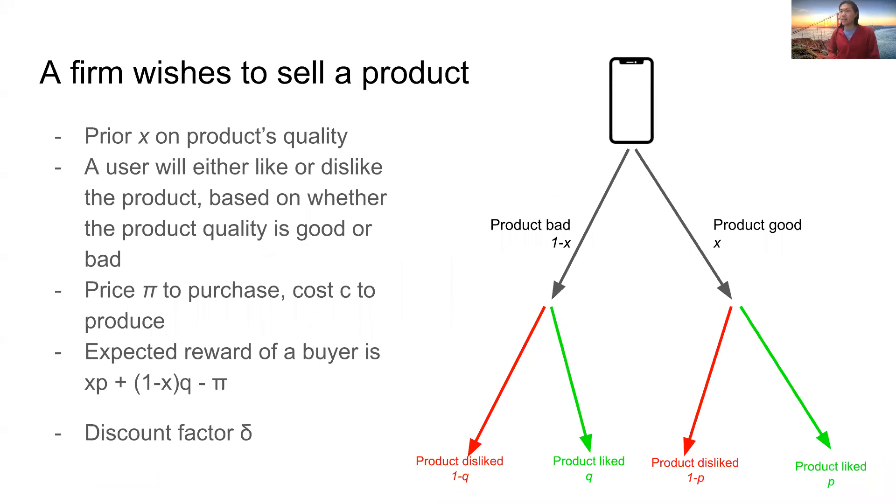We imagine that a firm wishes to sell a product. This product has a quality, either good or bad, and we have a prior X on the product's quality. The user, upon purchasing the product, will leave a review either liking or disliking the product. The probability of the user leaving a like or dislike is based on whether the product is good or bad.